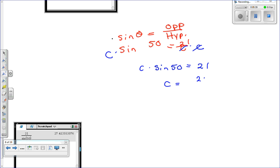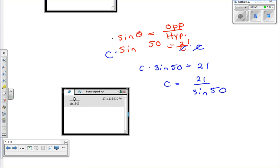C equals 21 divided by sine of 50 degrees. Calculator. Get your calculator out. Try that out. You type that in. 21 divided by sine of 50 gives you 27.41. I'm going to go one digit, so C is equal to 27.4.